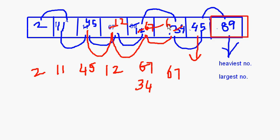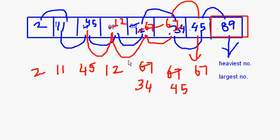So 67 actually comes to this place and 34 comes to this. Then 67 and 45: 67 moves here and 45 comes here. After this pass, 67 — the second largest number — has come to the end. 89, the largest, is already at the end, and now 67 has also settled.